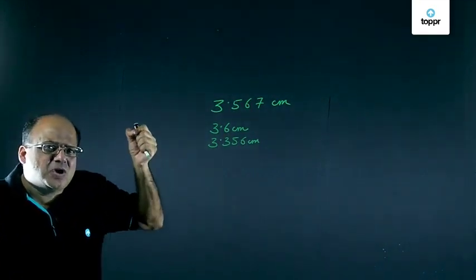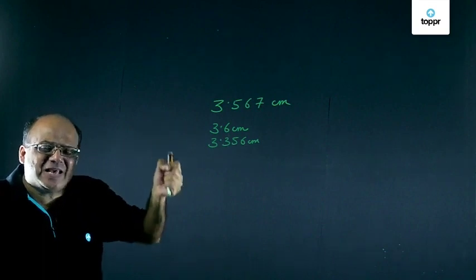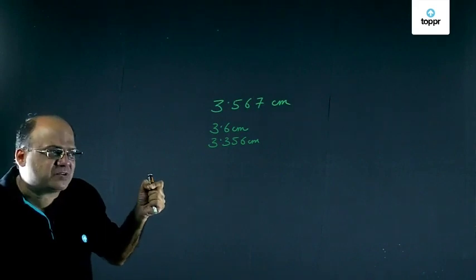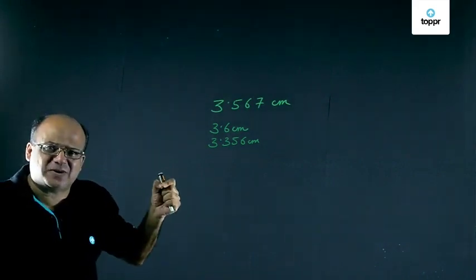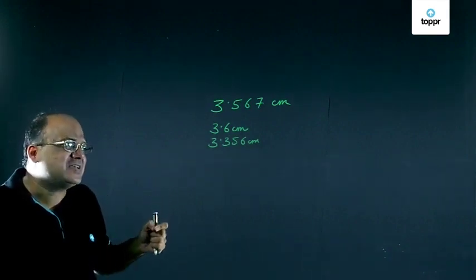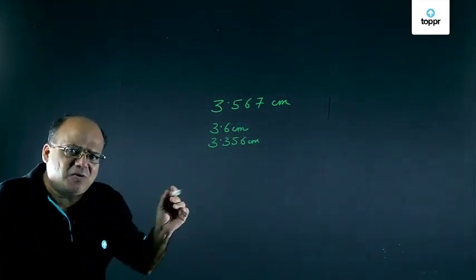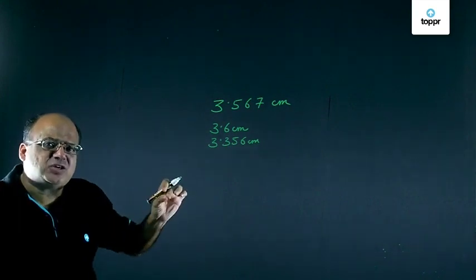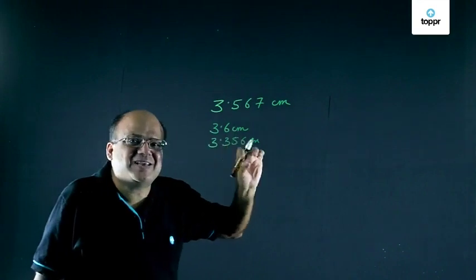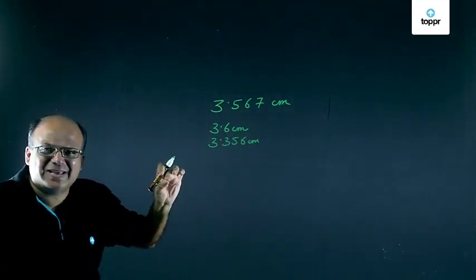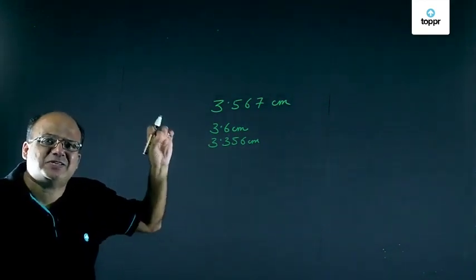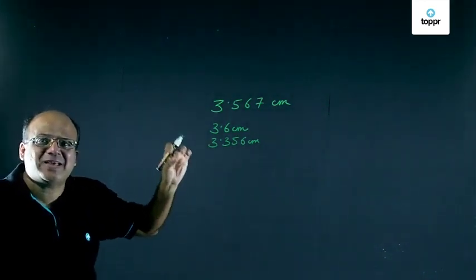Now to measure the length of an object, we have got an equipment called Vernier Calipers. Vernier Calipers has got a main scale and a Vernier scale. Now how to find the least count of this Vernier scale. What is the least count? Least count is the minimum value that can be measured accurately by an instrument.